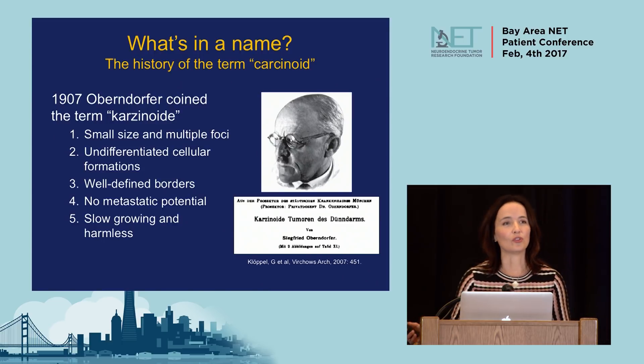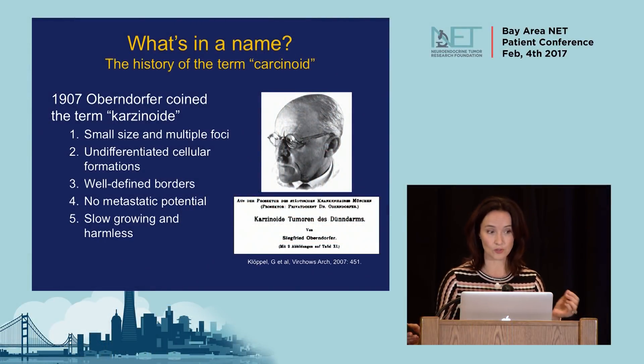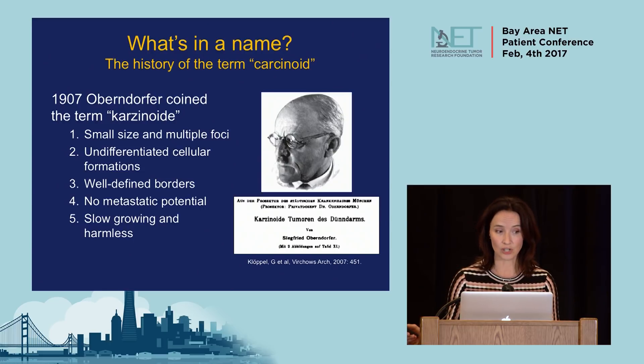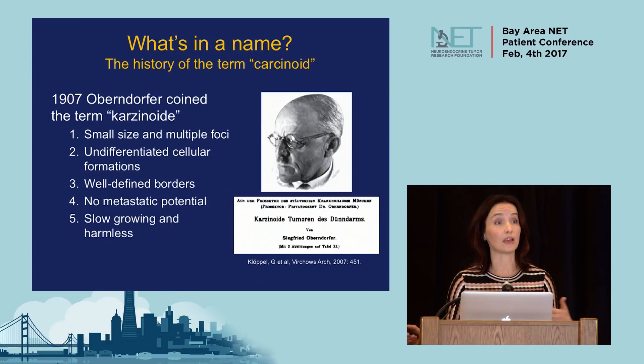So what's in a name? The word 'carcinoid' is often used interchangeably with 'neuroendocrine tumor.' Carcinoid came first, derived from a German word coined by pathologist Dr. Oberndorfer in the early 1900s, meaning 'cancer-like.' Back then, these weren't even thought to be cancers — they were thought to be small, slow-growing, and harmless with no metastatic potential. For close to 100 years this was perpetuated, and cancer registrars didn't recognize these as cancers. We now know these are cancers, and the word carcinoid is falling out of favor.